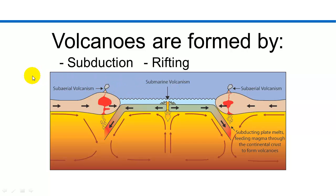dehydrates and forms magma that will rise through the crust to be erupted at the surface. Another way is through rifting. In this case, two plates are pulling apart from each other, and in that thinner area, magma is able to rise and erupt at the surface. In this case, the eruptions are occurring on the ocean floor.